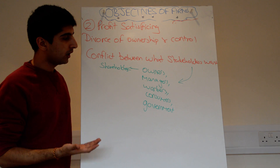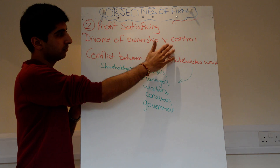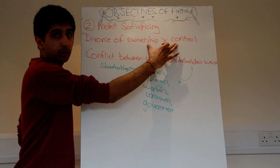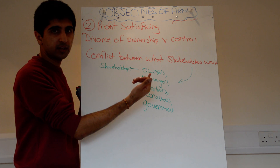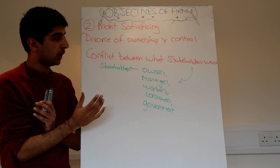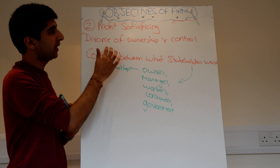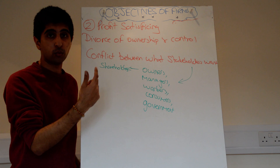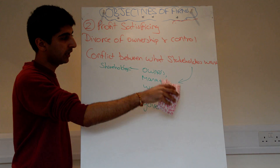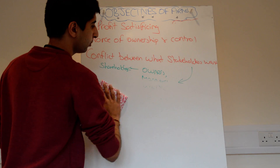Consumers will want lower prices, and that often goes against profit maximisation. Other stakeholders have different objectives too. So how do you balance everybody? The answer is profit satisficing: make a level of profit that maximises the benefits to all stakeholders. That level of profit will differ for each firm, but that's why profit maximising won't always work — we need to look after the objectives of all different stakeholders.